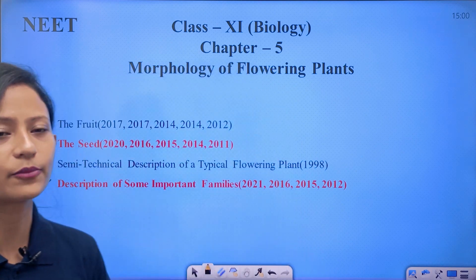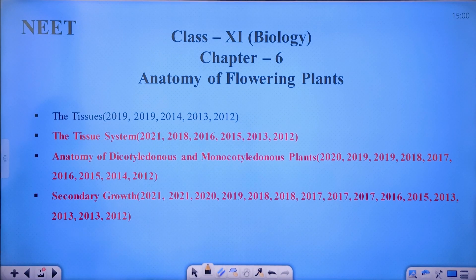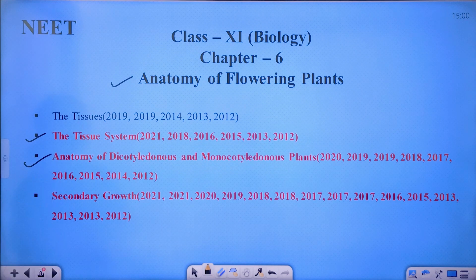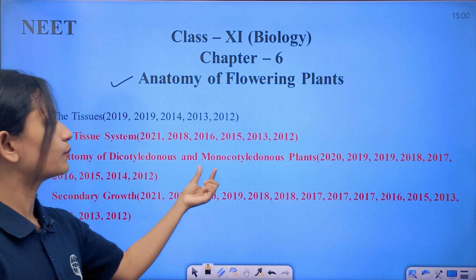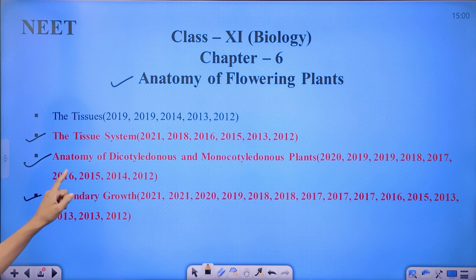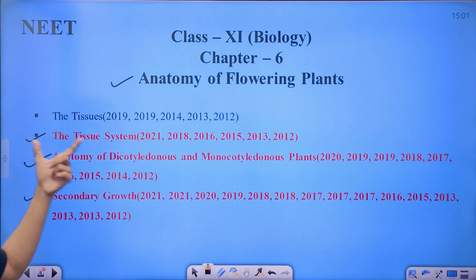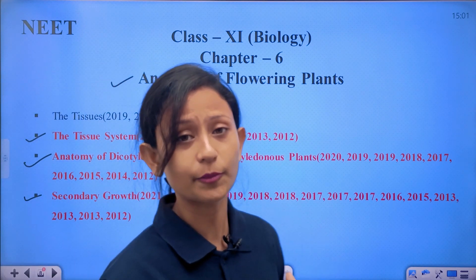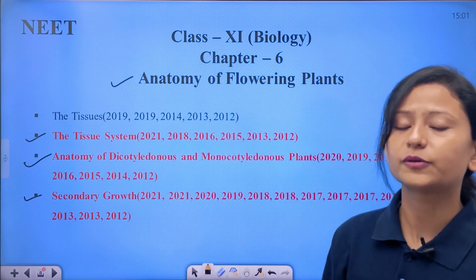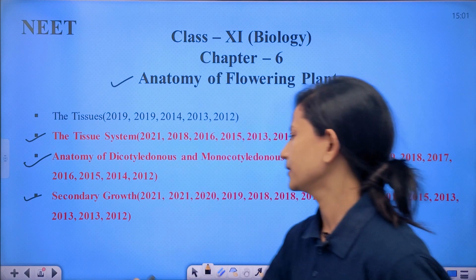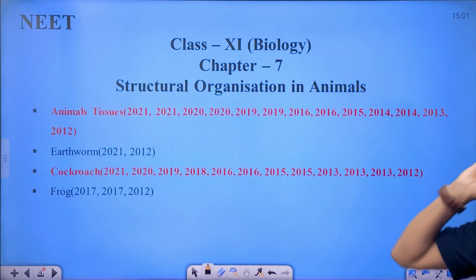Next chapter: Anatomy of Flowering Plants. The important topics are the tissue system, anatomy of dicotyledonous and monocotyledonous plants, and secondary growth. These are important subtopics from a NEET point of view.